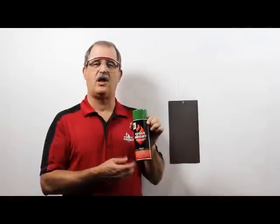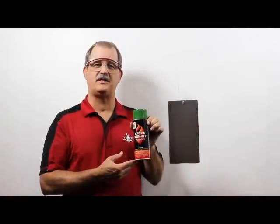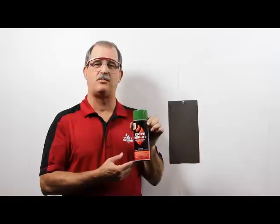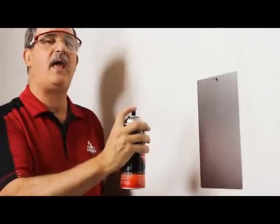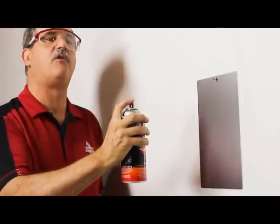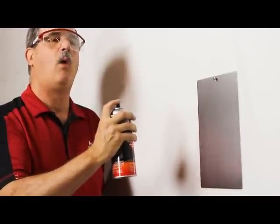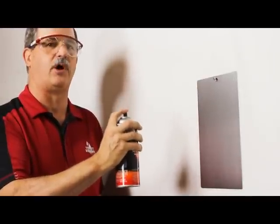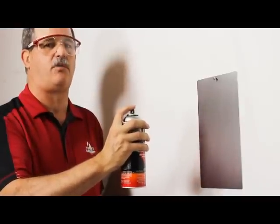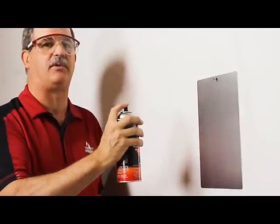We're going to use one of the 30 colors of Stove Bright high temperature paint to demonstrate the application process for three light coats. Before you paint, you want to make sure you have a clear flow of the product to the nozzle. What I've done is I've shook the can up real well and sprayed it out on a piece of cardboard before I'm ready to start this application.